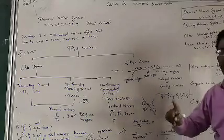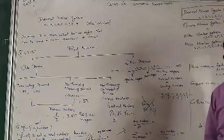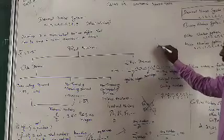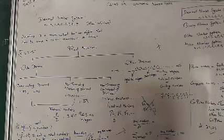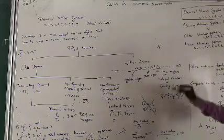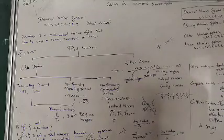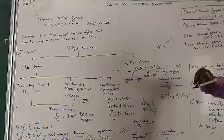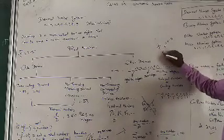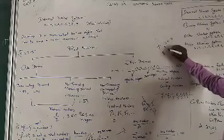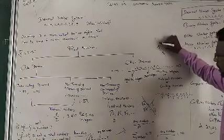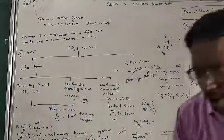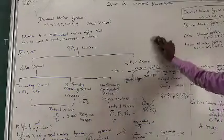But all rational numbers cannot be written as integers. For example, 3 by 4 is a rational number, but it is not an integer because it equals 0.75 in decimal form. So we can conclude that all rational numbers cannot be integers.